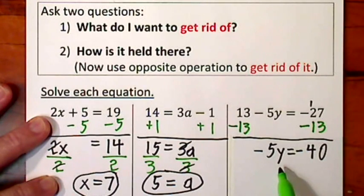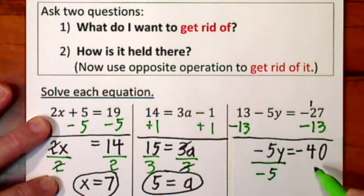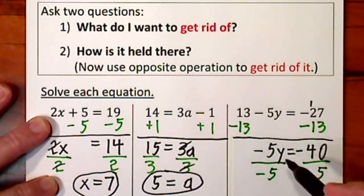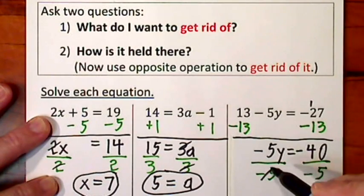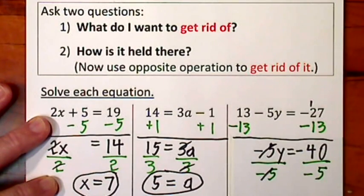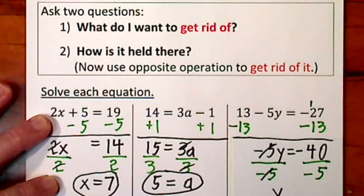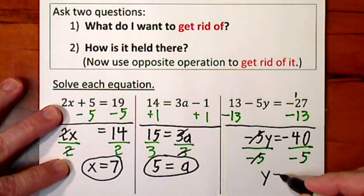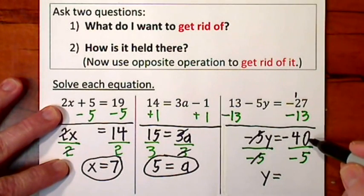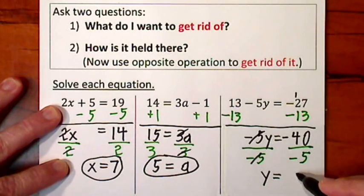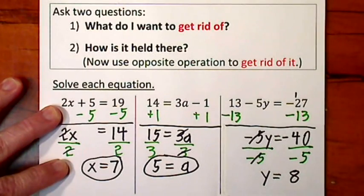Now I want to get rid of the negative 5. That way I'll have y by itself. It's held by multiplication. So I divide by negative 5. I come to the other side of the equal sign and I divide by negative 5. Negative 5 divided by negative 5 is positive 1. So we have y all by itself. Bring down the equal sign. Negative 40 divided by negative 5 is positive 8.